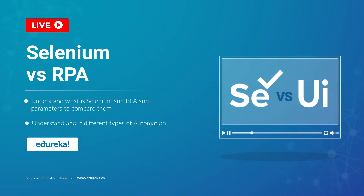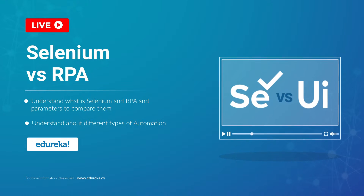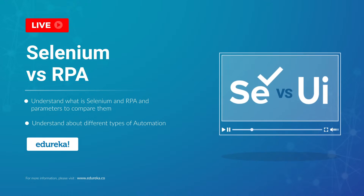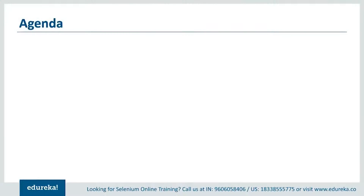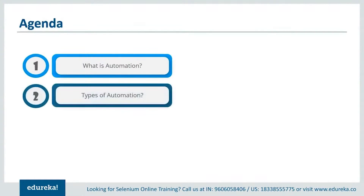You might wonder why are they of such great importance. Stick on to this video to find out what exactly are their features and how they differ from each other based on certain parameters. Let's take a look at the agenda for this session. First, let's start by understanding what is automation and take a real-time example that demonstrates its advantages, then discuss the different types of automation that exist, and after that I'll give you a brief introduction to automation testing and business process automation, which are the major fields where one can build a career.